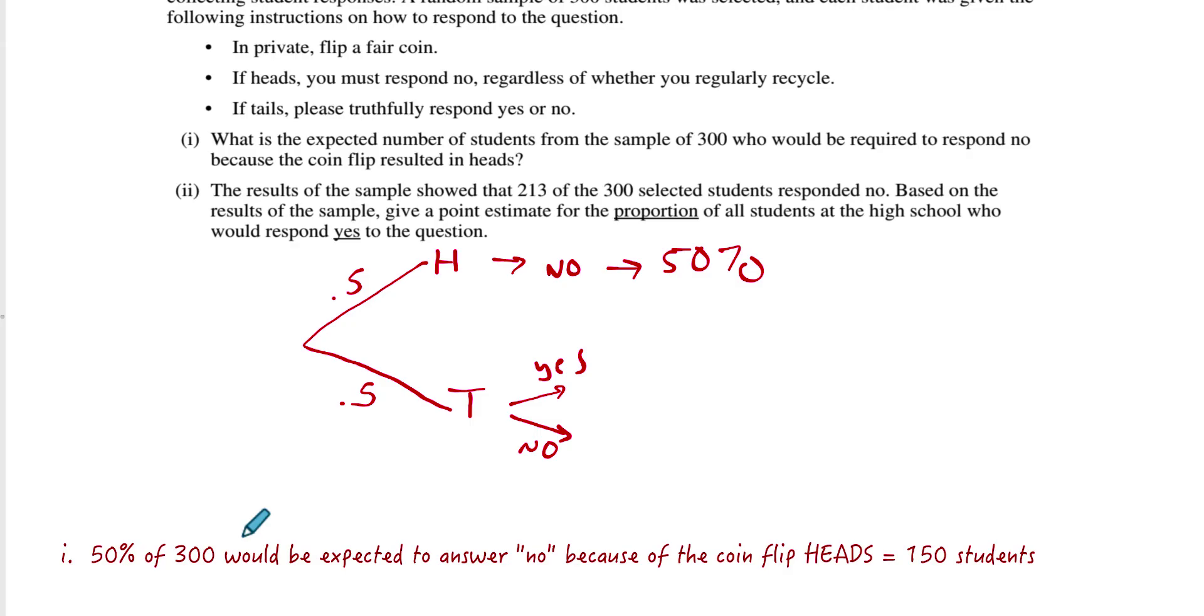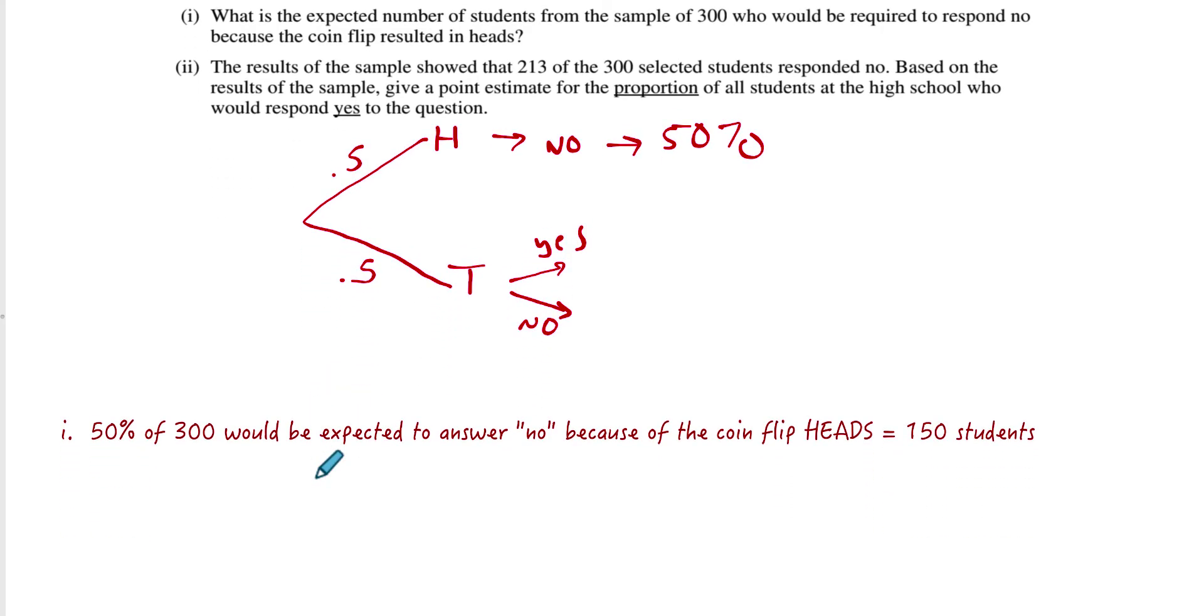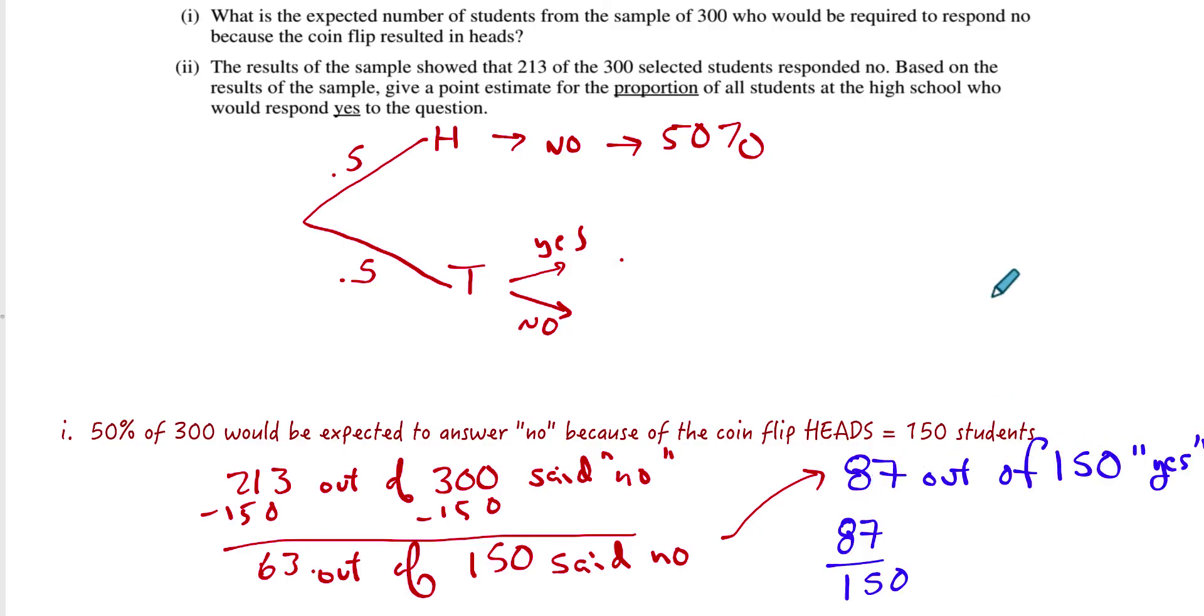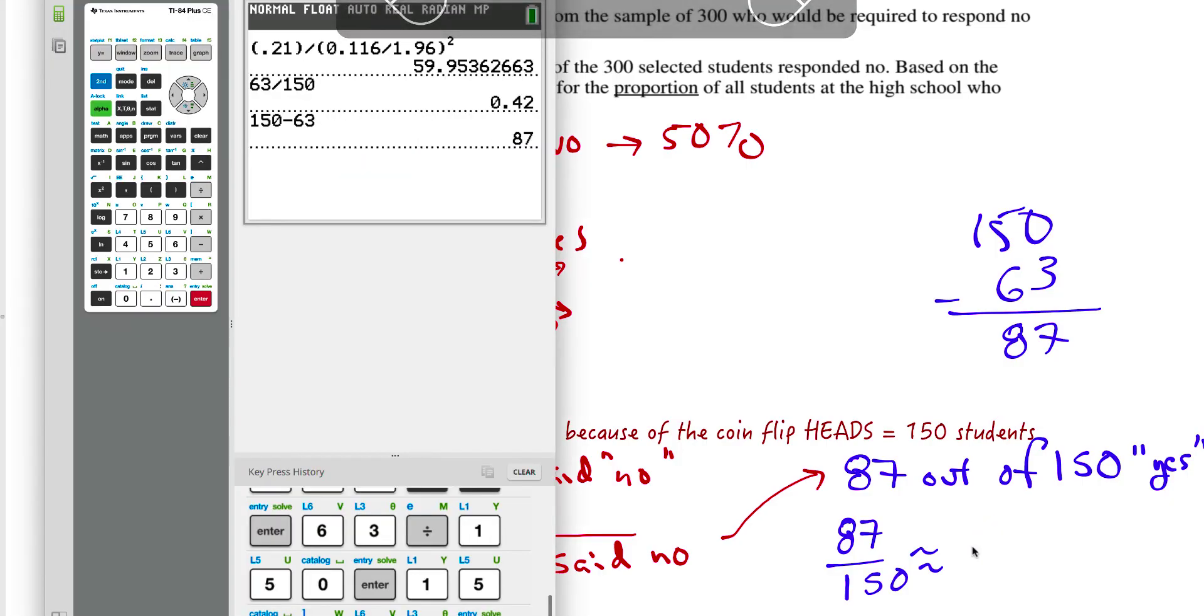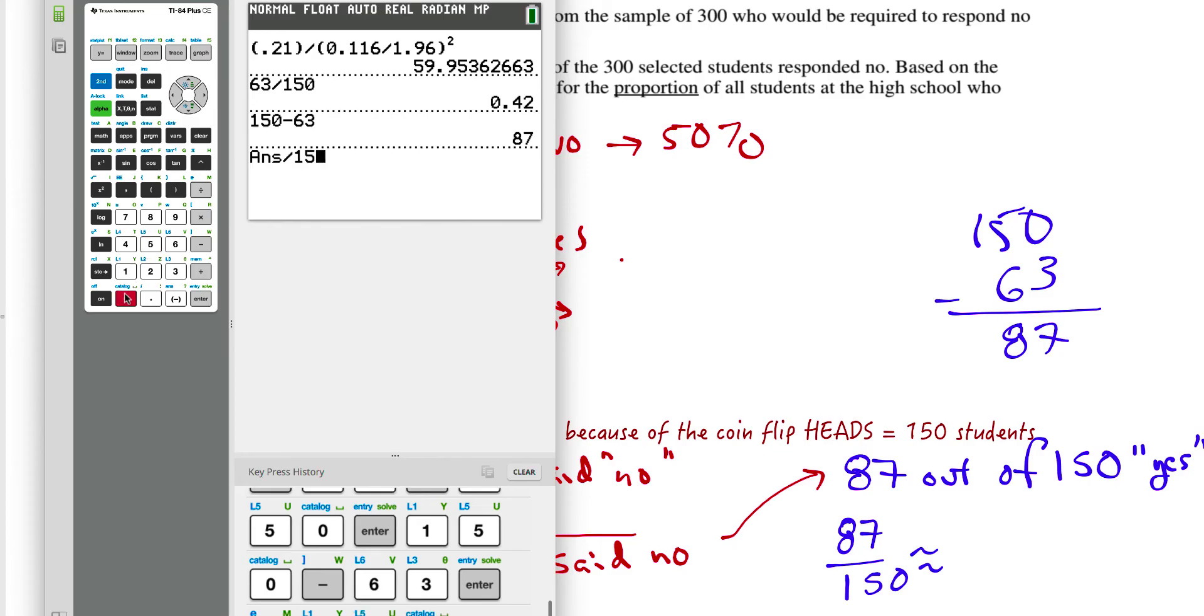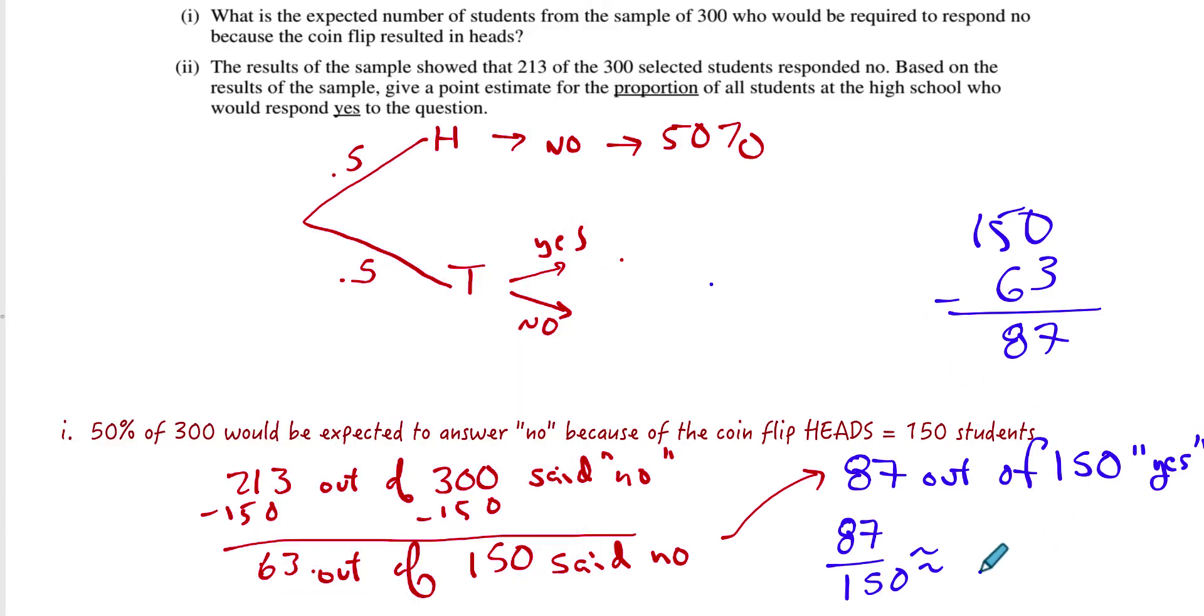And then part two, the results of the sample showed that 213 out of 300 responded no. So that makes me ask some questions, you know, right off the bat. If 213 said no, I know that 150 of them was due to flipping heads. So let's take 150 out of both of these. Let's take away the 150. That means that 63 out of 150 said no and they were being truthful. So that means if 63 out of 150 said no, 87 out of 150 must have said yes. That's if we take the 150 and we take away the 63 no's, that leaves 87 yeses. So 87 out of 150 said yes. That works out to approximately. Let's get that calculator out of here. Let's divide that by 150 and we will get 58%, 0.58. So about 58% will say yes.